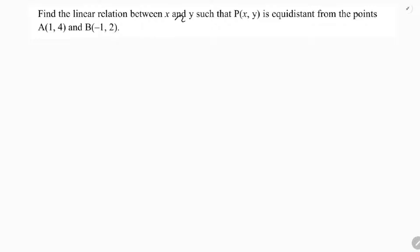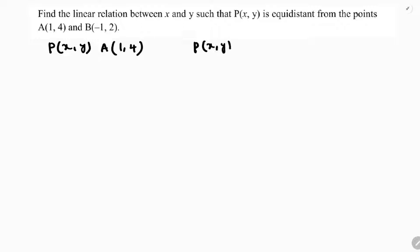Find the linear relation between x and y such that the point P(x, y) is equidistant from the points A(1, 4) and B(-1, 2). So here the point P(x, y) is equidistant from A and B, which clearly means PA equals PB.